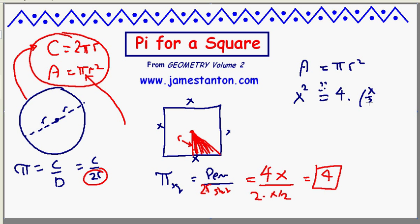Pi for a square I claim is 4. The radius is x over 2 squared, and that's 4 times x squared over 4, which is x squared. Yep.